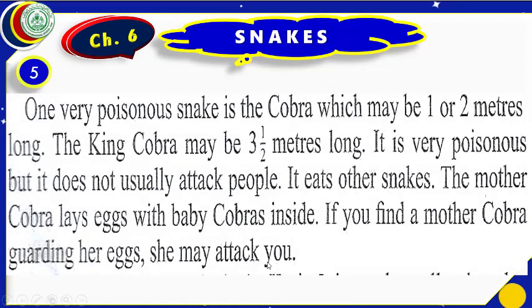One very poisonous snake is the cobra, which may be one or two meters long. The king cobra may be three and a half meters long. It is very poisonous but it does not usually attack people — it eats other snakes. The mother cobra lays eggs with baby cobras inside. If you find a mother cobra guarding her eggs, she may attack you.